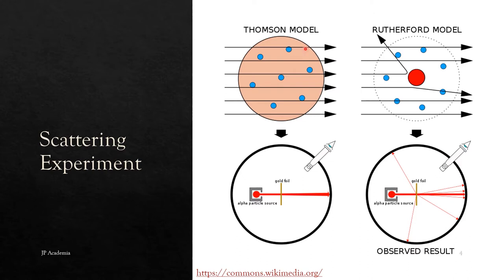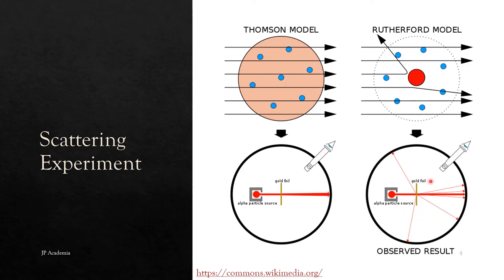If the Thomson or the Plum-Pudding model is accurate, wherein we have a homogeneous positive substance in which electrons are embedded, we expect that the alpha particle will have only small perturbation as shown here. Note that the alpha particle is smaller compared to an atom. On the other hand, if there is a dense positively charged nucleus placed at the middle portion of the atom, we can expect a larger deflection of the alpha particle, as shown in this part. This is what they observed in the Rutherford scattering experiment.